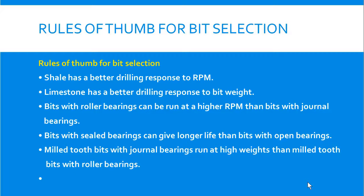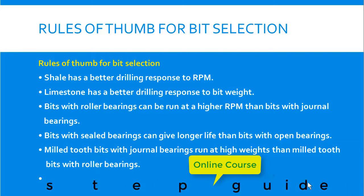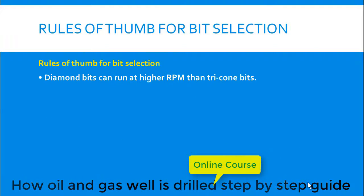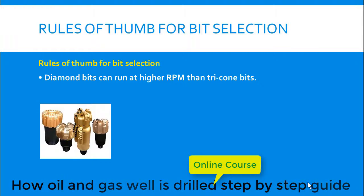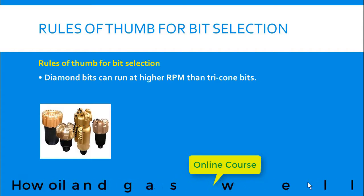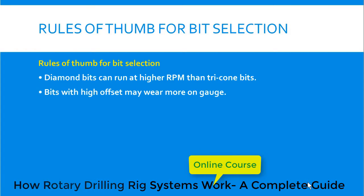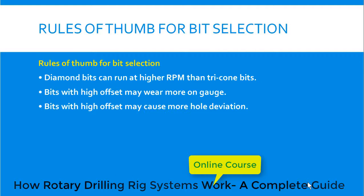Milled tooth bits with journal bearings can be run at higher weight on bit than milled tooth bits with roller bearings. Diamond bits can be run at higher RPM than tricone bits. Bits with high offset may wear more on gauge, and bits with high offset may also cause more hole deviation.